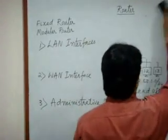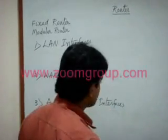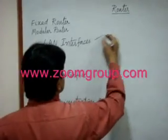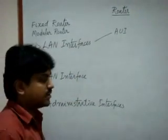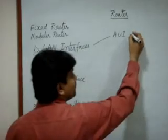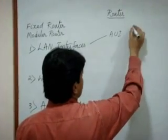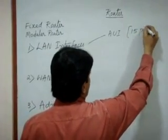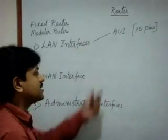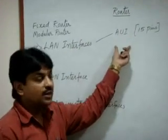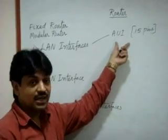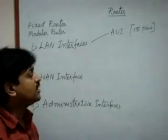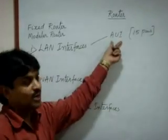The first LAN interface is the AUI — Attachment Unit Interface. This AUI has 15 pins and we can connect a LAN to it. If you want to connect an RJ45 connector with a Cat5 cable, we cannot connect directly to the AUI, so we need a transceiver. A transceiver acts as a converter to connect to the AUI.